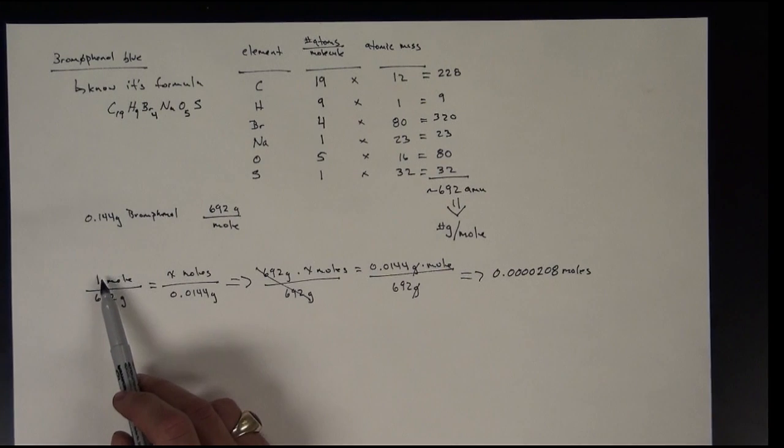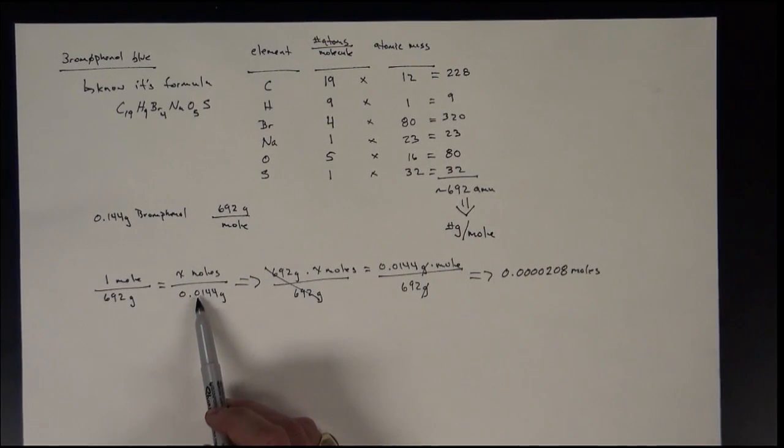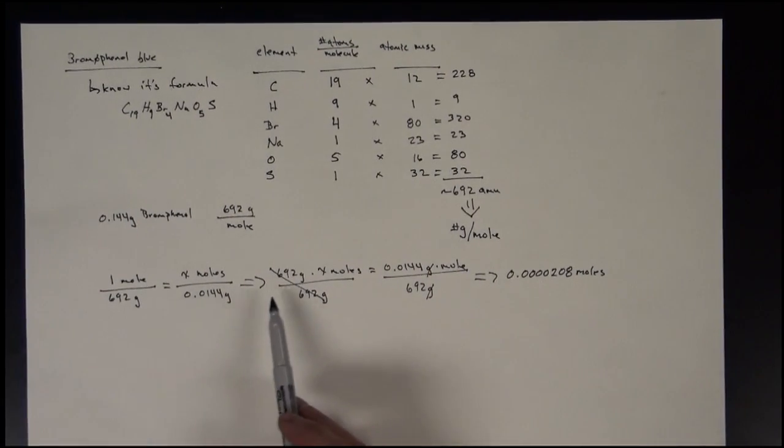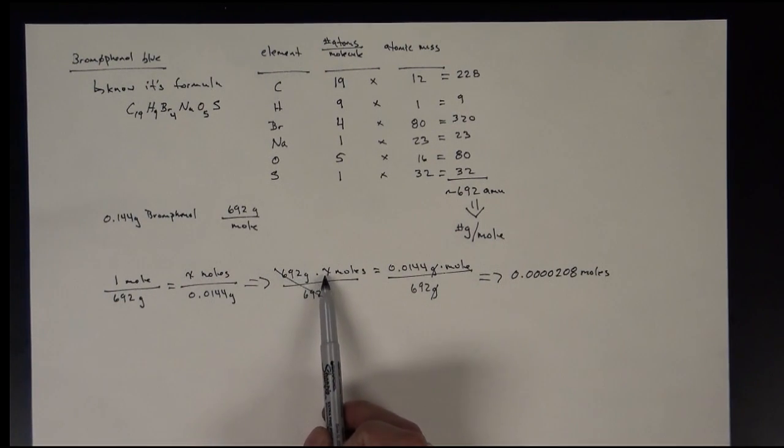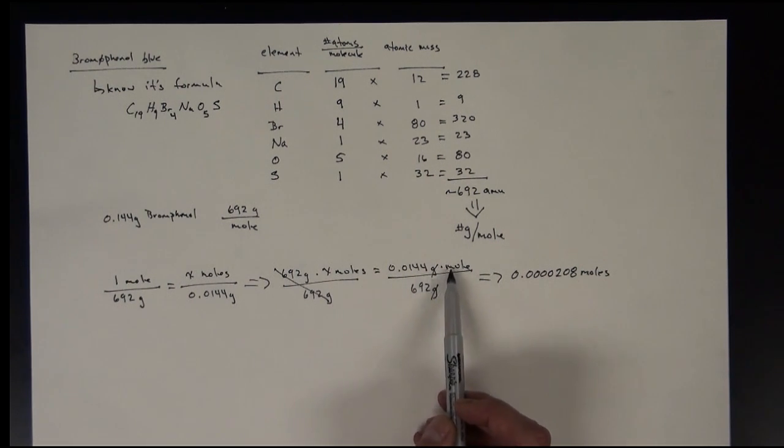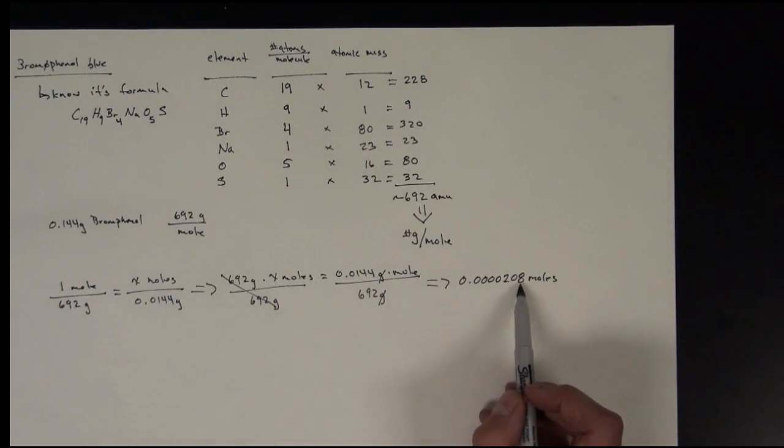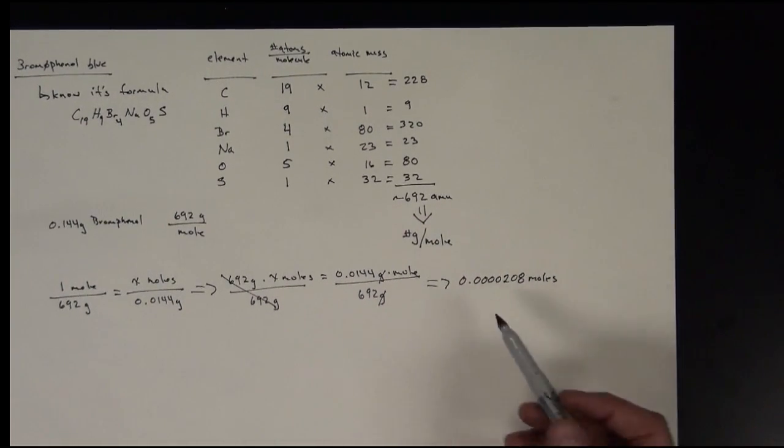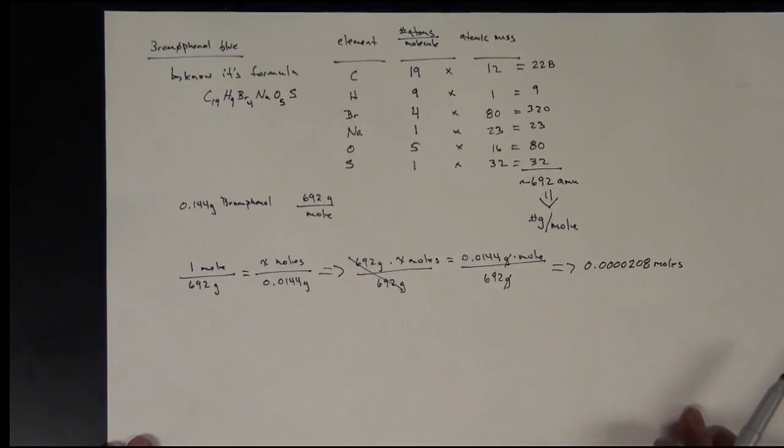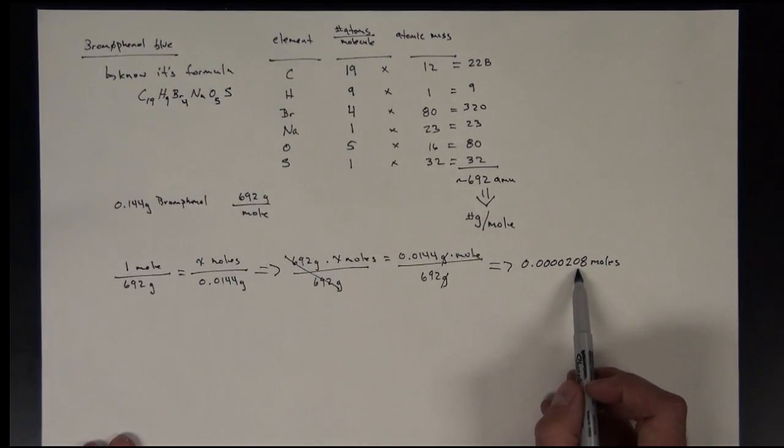So if we look at this once again, one mole is 692 grams. So I'm asking the question, how many moles is my 0.0144 grams? If I set up my proportion, do my cross multiplication, I have 692 times x moles is equal to 0.0144 grams times mole. Divide by 692 on both sides so I can get just my x variable. And then I'm left with 0.0000208 moles. Alright, this is kind of what I'm expecting. Because remember, if we go back to here, this is really small compared to this, so I'm expecting a very small number.